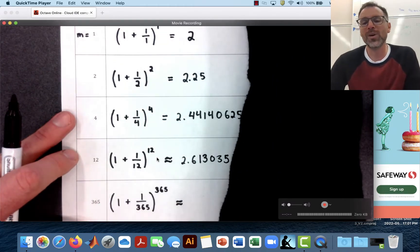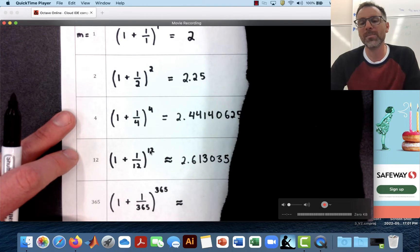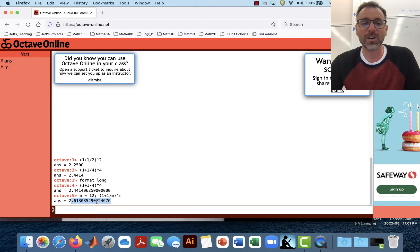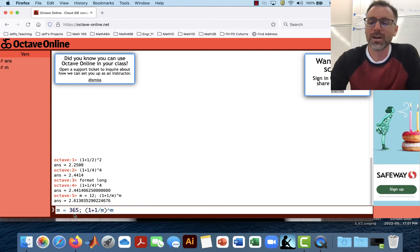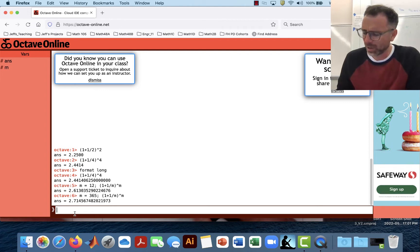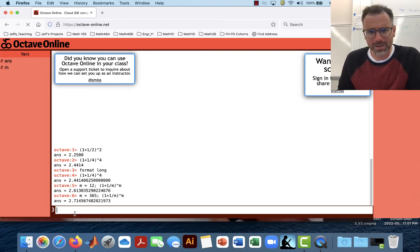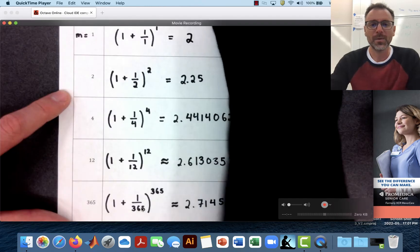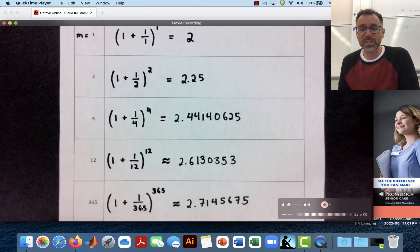And in fact, what if we ask ourselves the question, instead of compounding once every month, let's compound once every day. So let's go back to this calculator and we'll push the up arrow. Up arrow gives me the last version. And we'll say, hey, I want to compound 365 times a year. So I'm going to earn interest every single day. And now all of a sudden, I'm looking at 2.71456765. It's approximately equal to, it's not exact, right? And again, we're increasing the number.